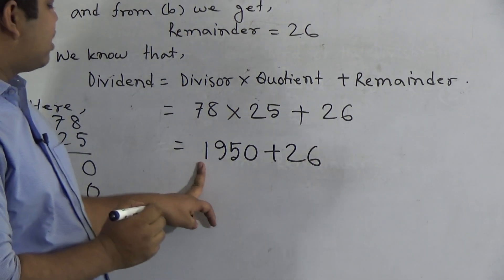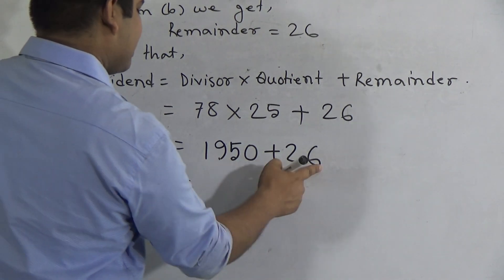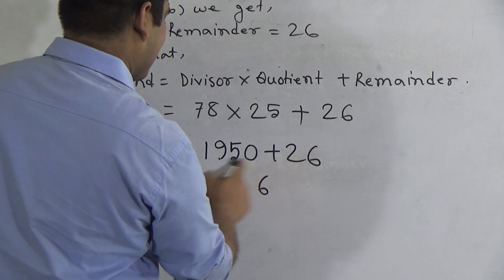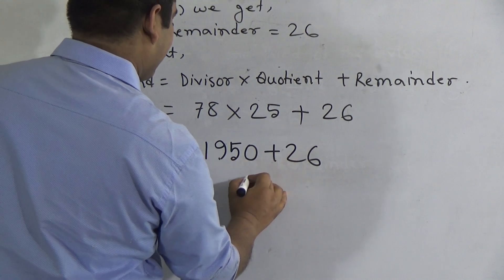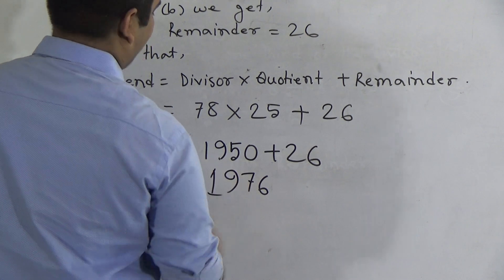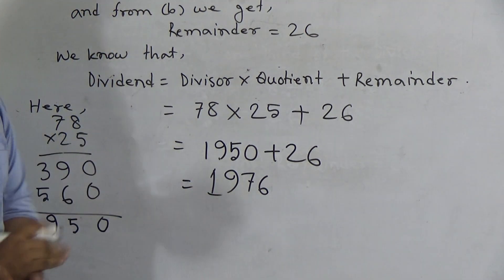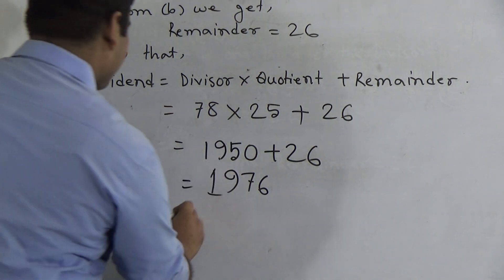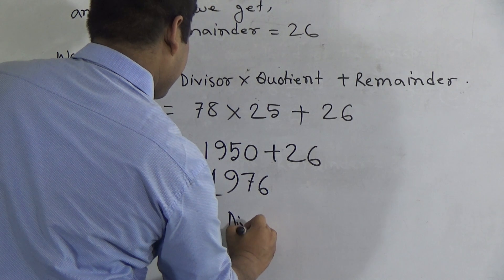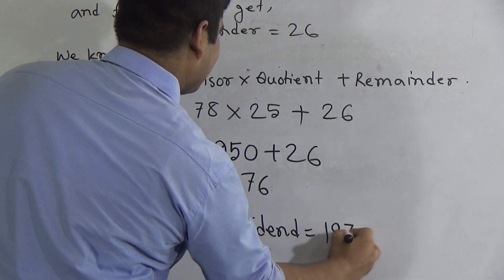We do the addition of 1950 with 26: 6 plus 0 is 6; 2 plus 5 is 7; 9 and 1 remain. So 1950 + 26 = 1976. Therefore, the dividend = 1976. Solution is done. We must write the answer: Dividend = 1976.